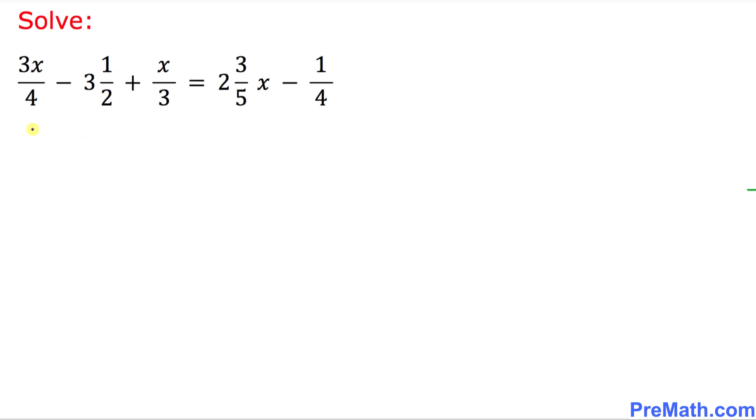We are going to convert these mixed numbers into improper fractions. So this equation could be written as 3x over 4 stays the same minus 3 times 2 is 6 plus 1 is 7.